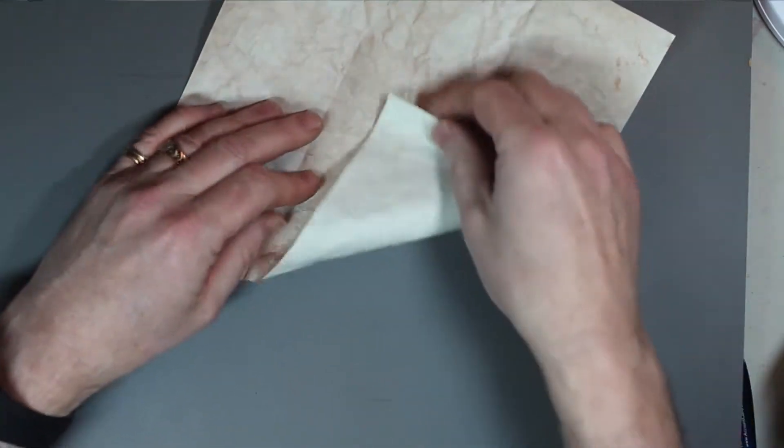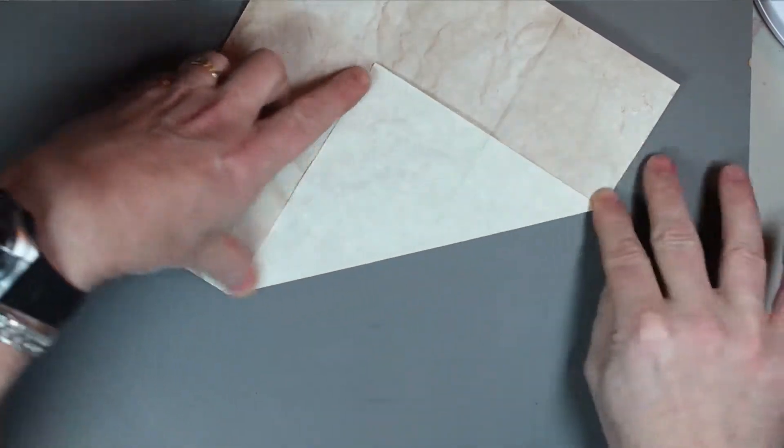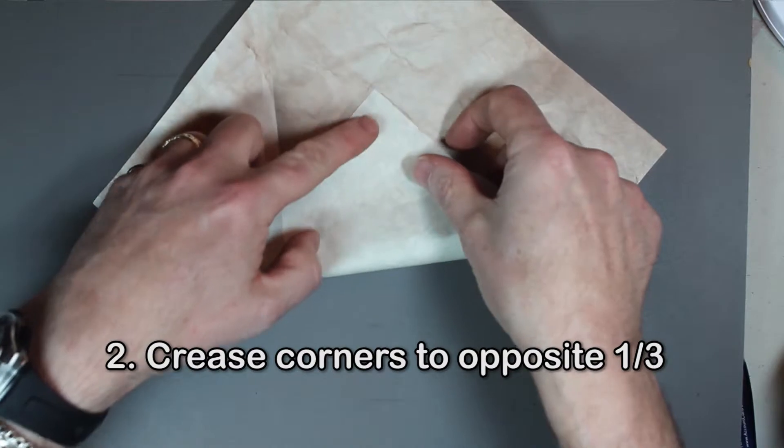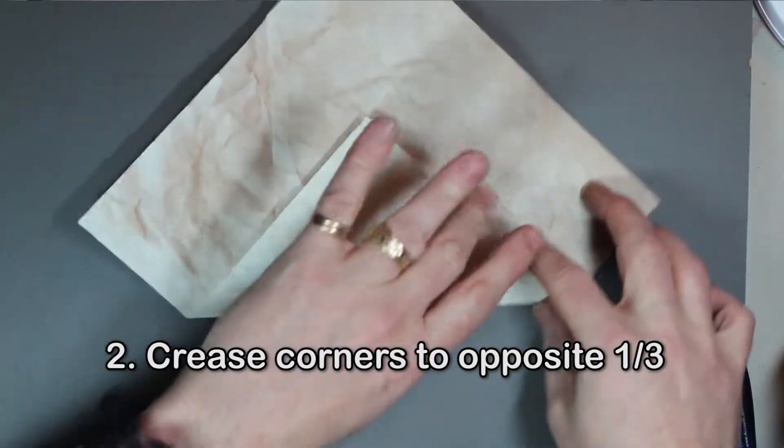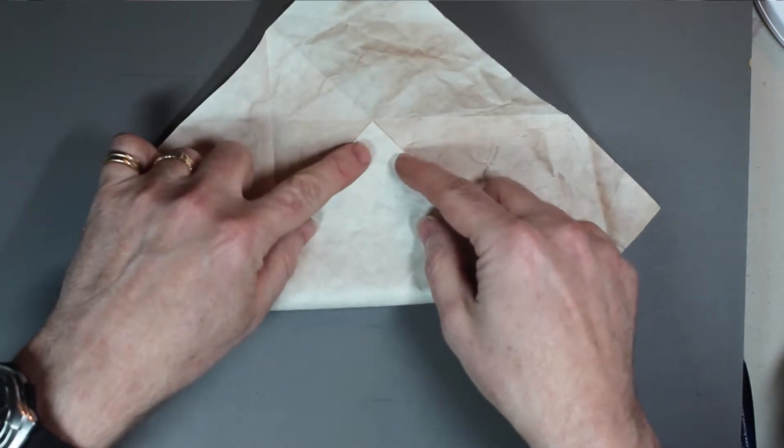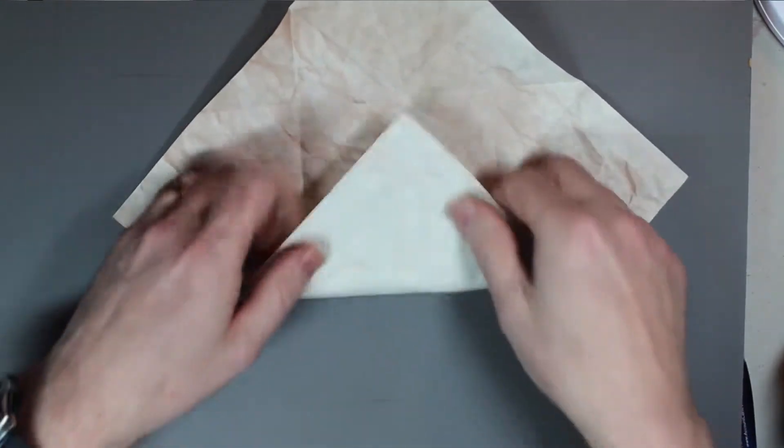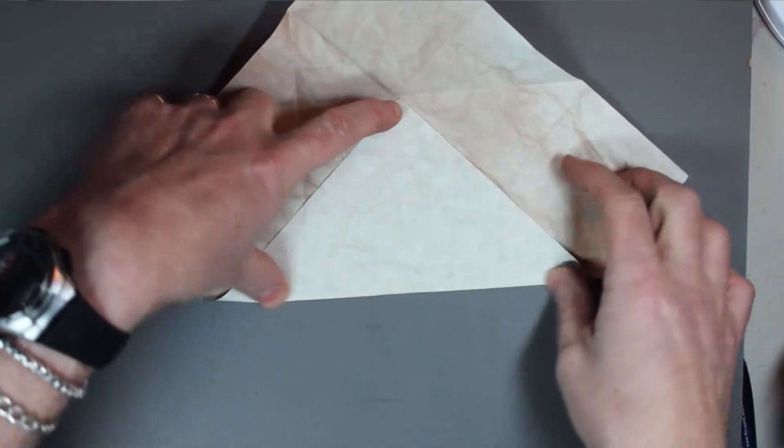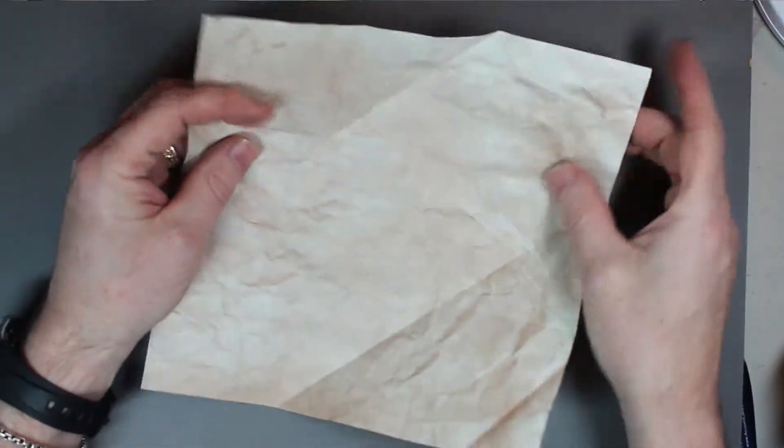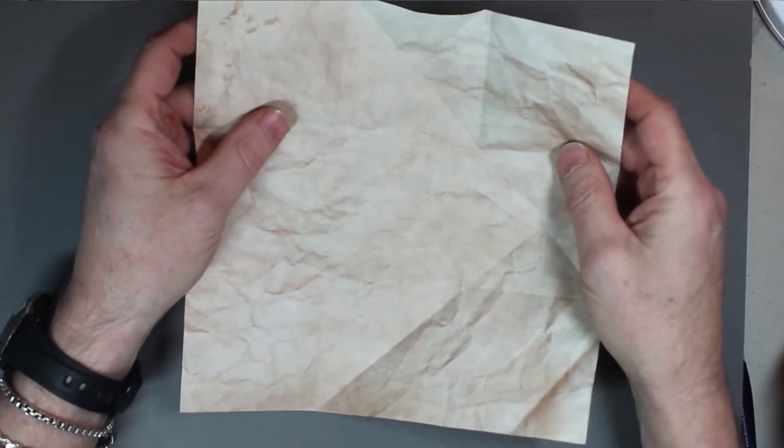And then we're going to crease corner to the opposite one-third mark like so. And you'll notice that once I get this part, you're going to begin to see how the box is going to form.